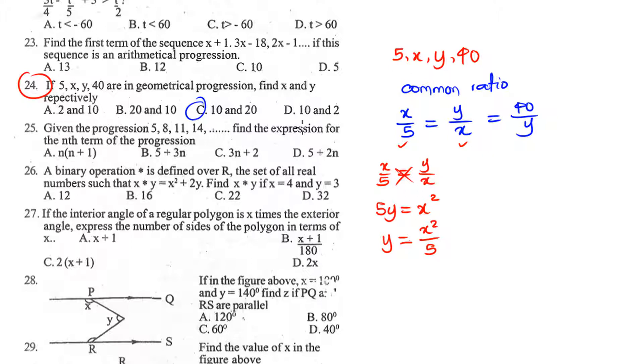What of the case in which we want to take x over 5 and 40 over y? We can say x over 5 is equal to 40 over y. If you cross multiply, we can say xy is equal to 40 times 5. 40 times 5 is 200.